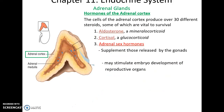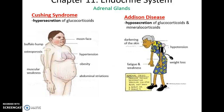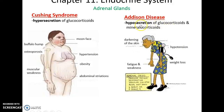There are also adrenal sex hormones — a small amount of sex hormones that help supplement what's released by the gonads and may affect embryonic development. Cushing's disease results from hypersecretion of corticoids, producing strange deposition of lipids — a buffalo hump and moon face — along with obesity, weird striations in the abdomen, and muscular weakness. Addison's disease is a hyposecretion of glucocorticoids and mineralocorticoids, leading to hypotension, low blood pressure, weight loss, fatigue, and weakness.